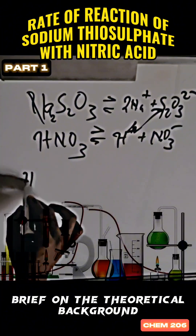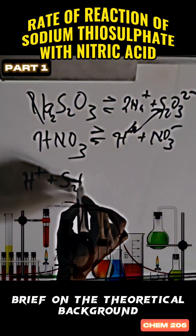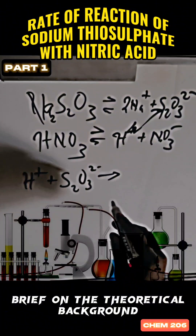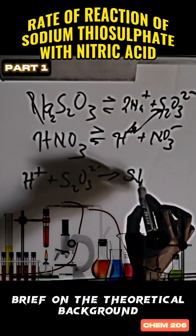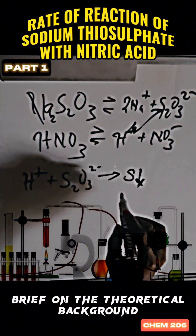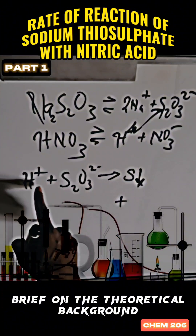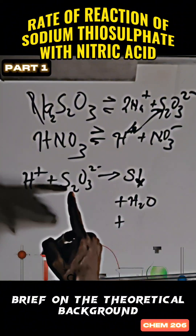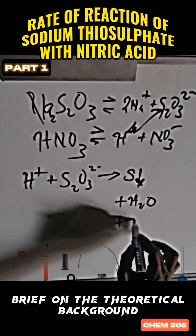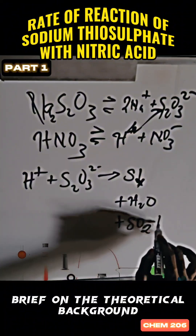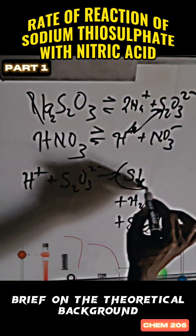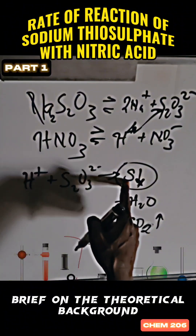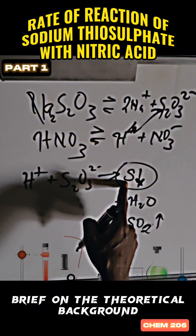The hydrogen ion from the nitric acid reacts with the thiosulfate ion. Looking at the reaction, sulfur will be precipitated in the solution. Oxygen and water can also be produced, and sulfur dioxide may be given off. The rate of reaction is monitored through the precipitation of sulfur from the thiosulfate.